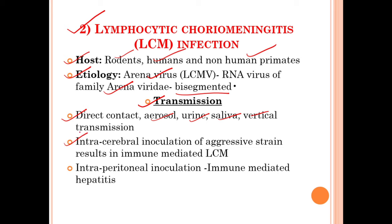The intracerebral inoculation of the aggressive strain of arenavirus results in immune-mediated lymphocytic choriomeningitis. If we inoculate the aggressive strain intracerebrally, it causes immune-mediated LCM; and if we perform intraperitoneal inoculation, it leads to immune-mediated hepatitis in the infected host.